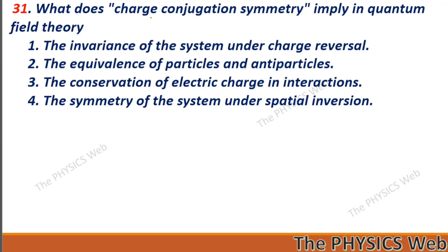Next: what does charge conjugation symmetry imply in quantum field theory? It implies the invariance of the system under charge reversal. So, one is your correct option.